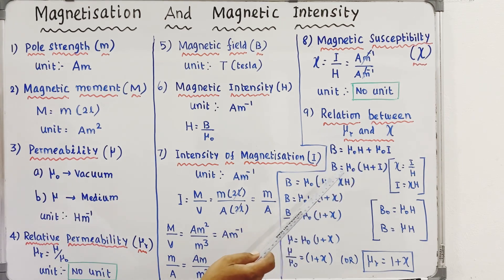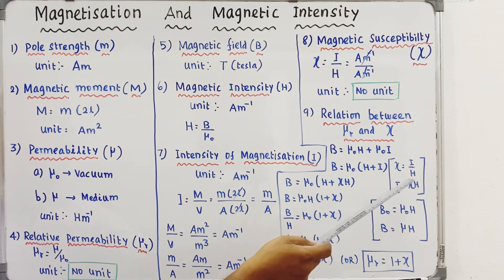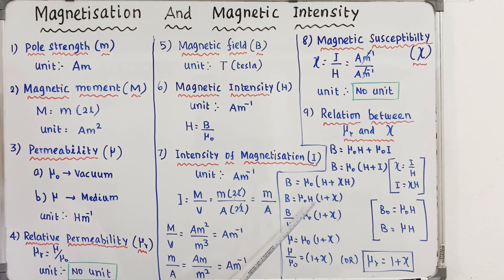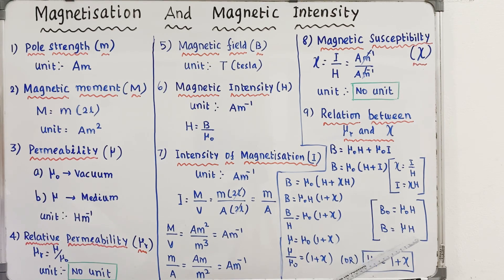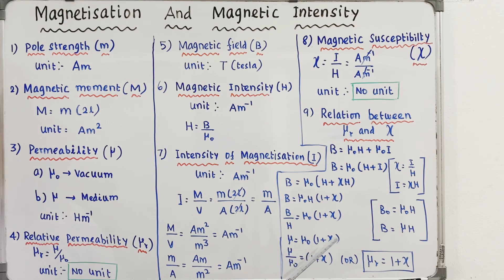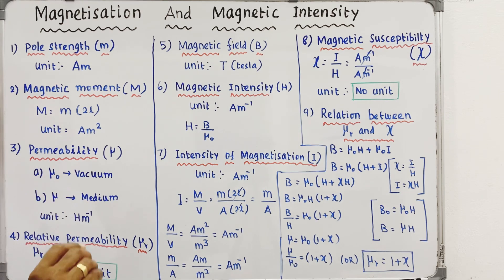B is equal to μ₀H + μ₀Hχ, which equals μ₀(H + I) since I = χH. From this, μ = B/H = μ₀(1 + χ), and therefore μr = μ/μ₀ = 1 + χ. This is the key formula relating relative permeability and magnetic susceptibility.